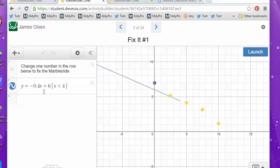And over here we have the equation of the line. Of course, the negative 0.4 is the slope. 6 is the y-intercept. And this is the domain. This only goes up to x equals 4. In this game, you're going to be learning about slope, y-intercept, and domain. So let's hit Launch.